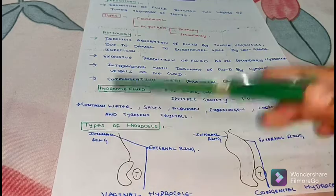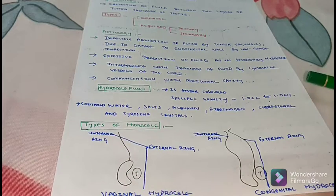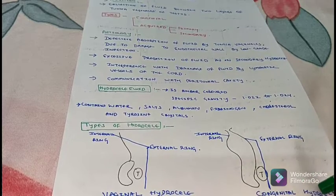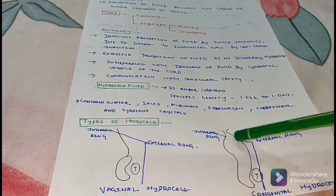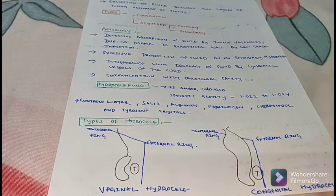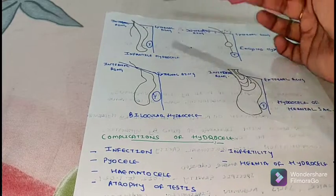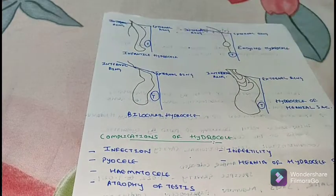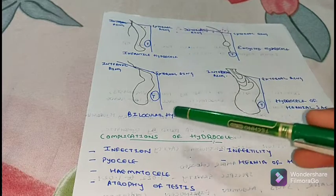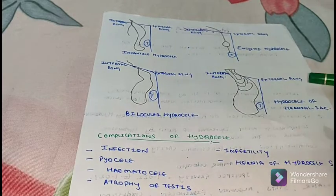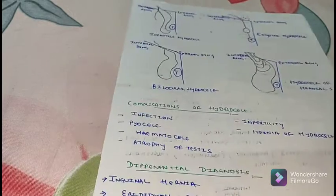In vaginal hydrocele, you can see the external ring, the internal ring, and the testes in the diagram. It can be congenital hydrocele — here you can see the external ring, internal ring, and testes. It can also be infantile hydrocele, assisted hydrocele, bilocular hydrocele, or hydrocele of the hernia sac.